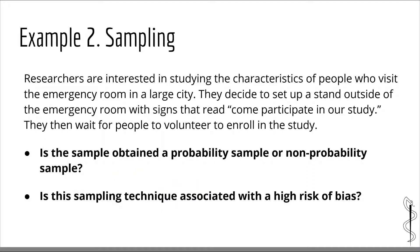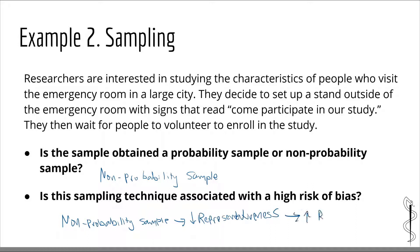In the next example, researchers studying the same population instead set up a stand outside the emergency room with signs saying 'come participate in our study,' then wait for people to volunteer. This is a non-probability sample because not every patient has a probability of being enrolled — only those willing to volunteer do. Therefore, the sample obtained is likely not representative of the target population, and there is a high risk of selection bias.